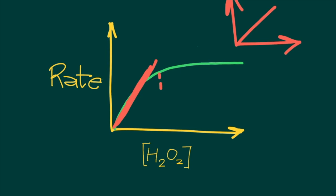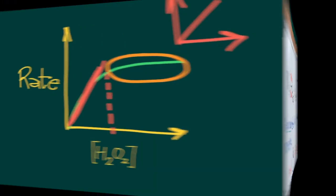But then, at this point here, where you have this concentration of peroxide or substrate, the reaction becomes zero order — an increase in concentration is no longer accompanied by an increase in the rate. And here we say that the reaction follows zero order kinetics.